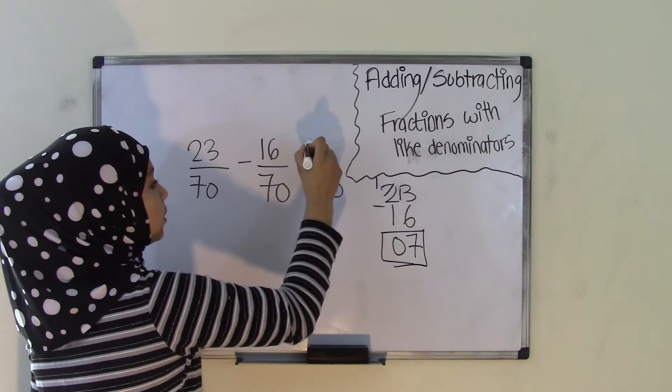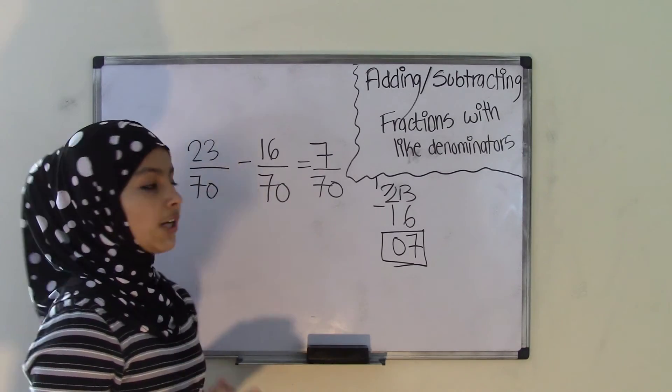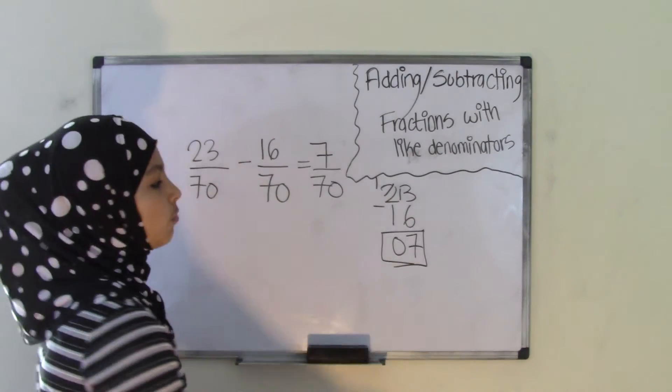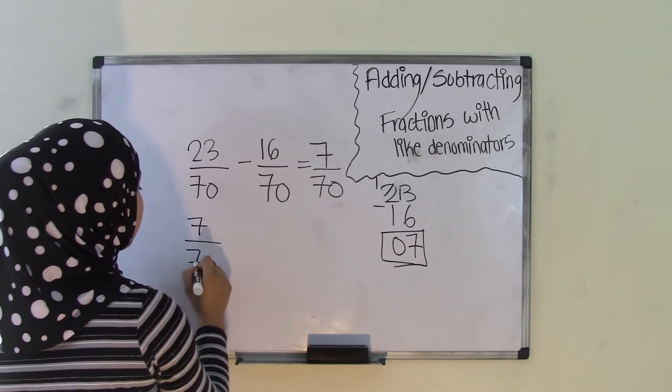Now, you have 7 over 70, but as you can see, if you have any fraction that you can reduce, then please do so. So 7 over 70, reduced. Now, what number can we divide both of these by?